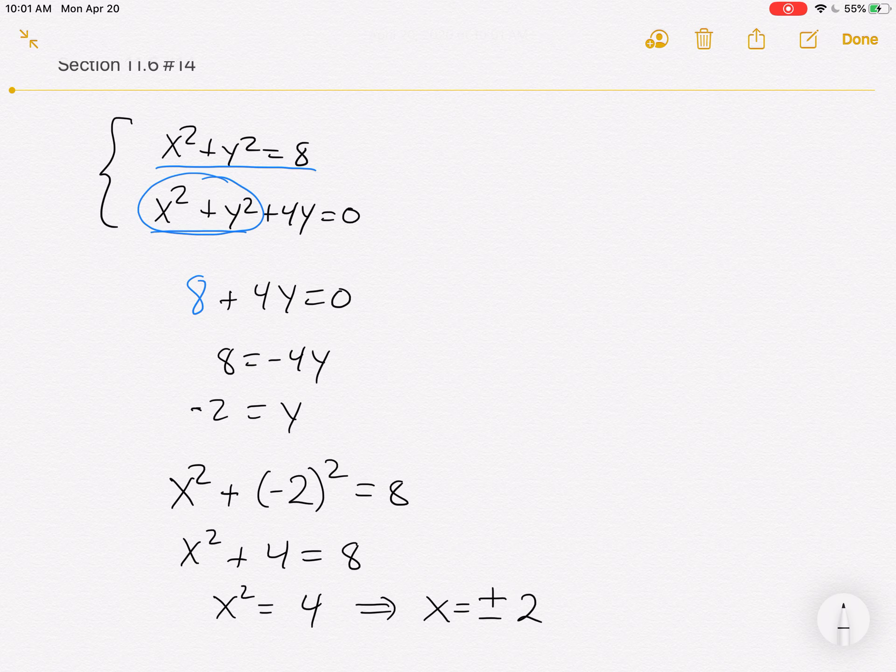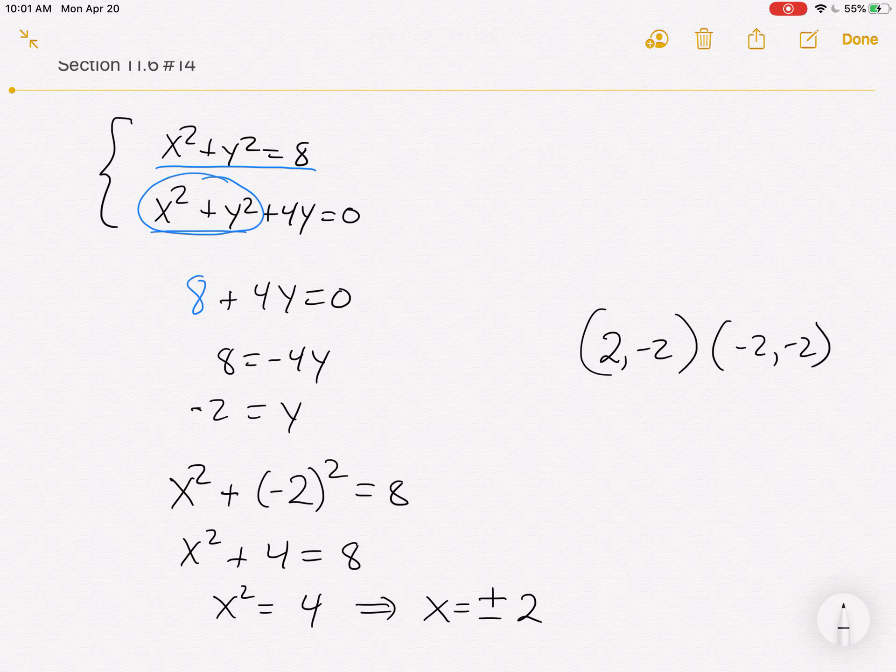So what are the two solutions to this? One is (2, -2), and the other is (-2, -2). That's where those two circles are intersecting one with another.